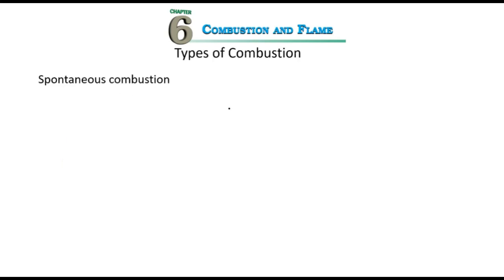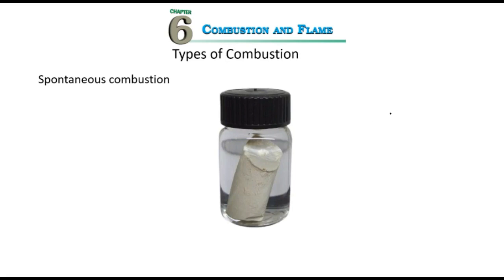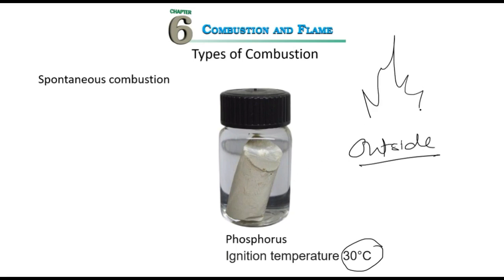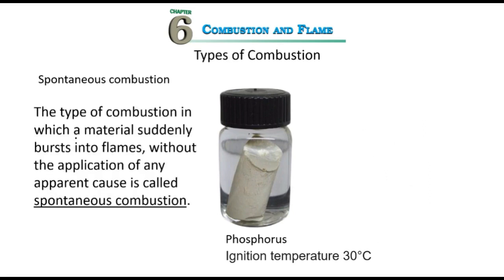The next type is spontaneous combustion. Phosphorus has an ignition temperature of 30 degrees, which is sometimes less than room temperature in summer. If you keep phosphorus outside, you need not give any external heat — it gets into fire on its own. That is why it is stored in water in a cool condition. Such combustion, where material suddenly bursts into flame without any external application of heat, is called spontaneous combustion.